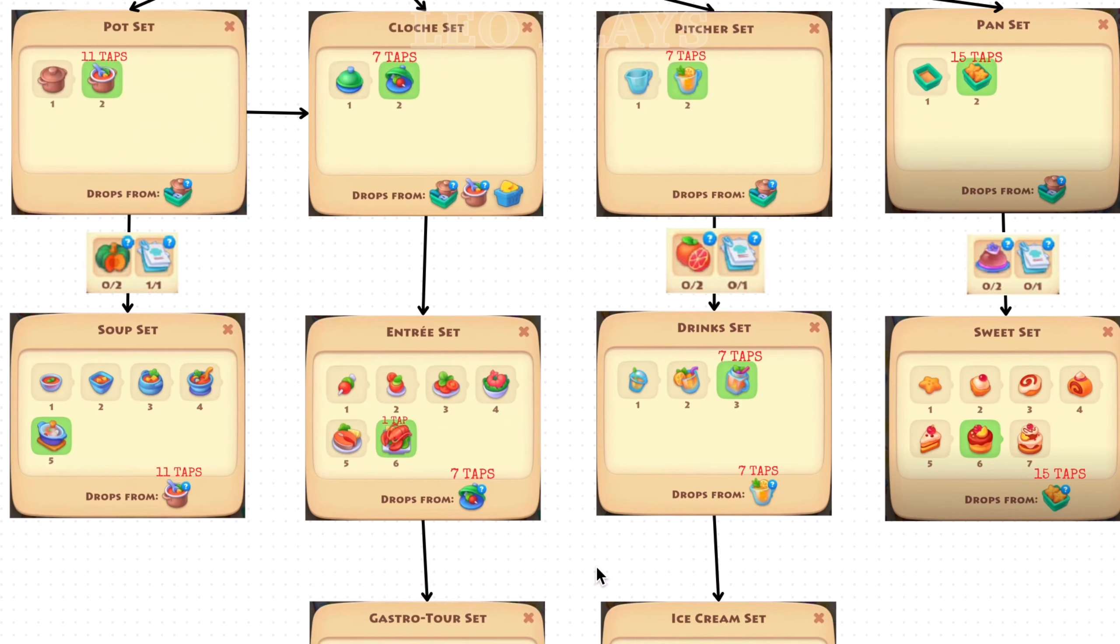From there, pot makes soup, clutch makes entree set, pitcher makes drink, and pan makes sweet set.